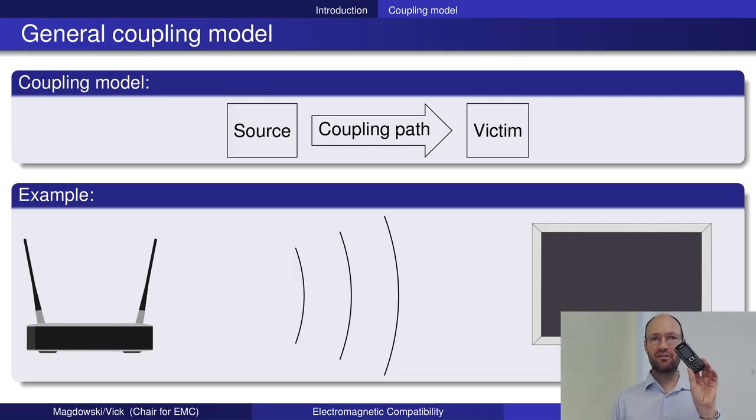The coupling path in this example was the electromagnetic field of the cell phone. Another example: you have your Wi-Fi router at home, which creates electromagnetic waves that could interfere with your TV set.